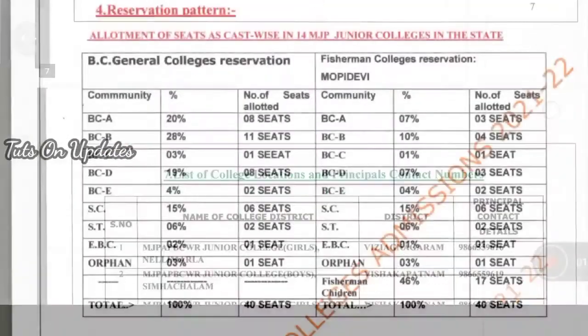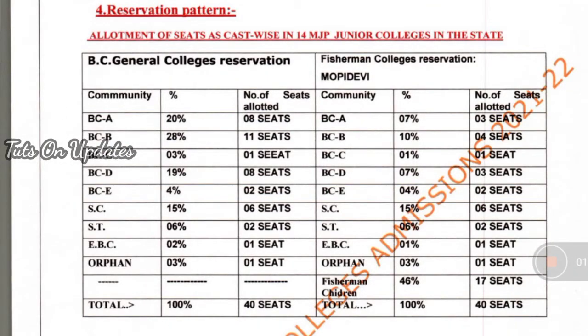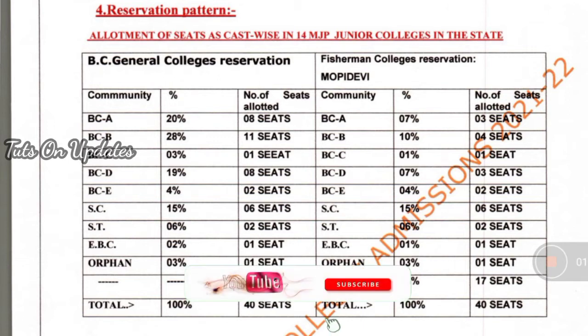Next, regarding the reservation pattern: there is complete info on sub-caste-wise seat allocation. 75% of seats are reserved for BC residential schools and BC welfare students. The remaining 25% of seats are reserved for BC private schools, social welfare, and tribal welfare students.